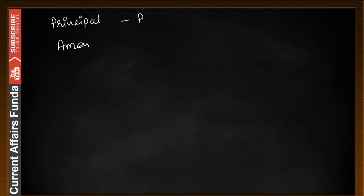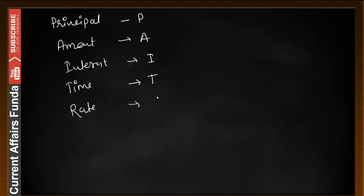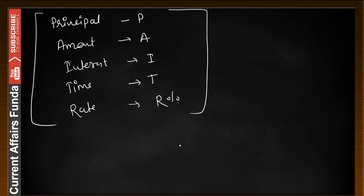We will use certain abbreviations: for principal we use P, for amount we use A, for interest we use I, for time we use T, and for rate of interest we use R%. These are the abbreviations you should understand. This is the introduction lecture — after this we will start from the initial topic. The first questions will come in the next part. So now we know the definitions and the differences between the two.